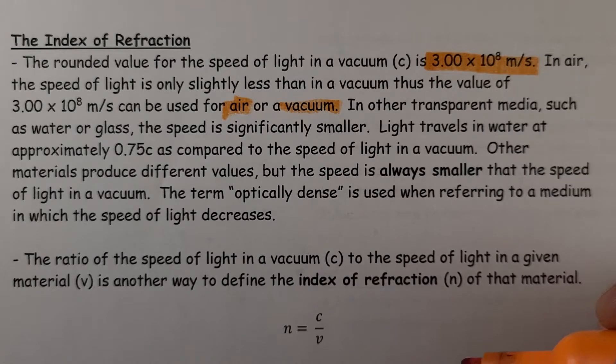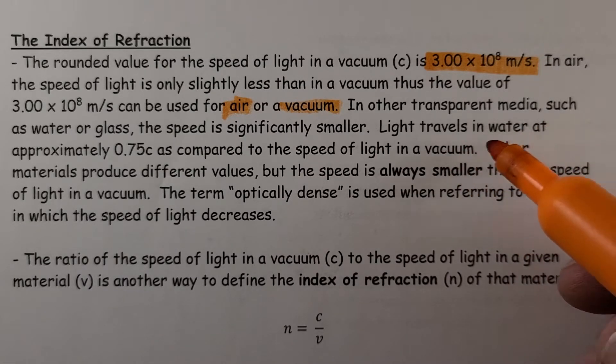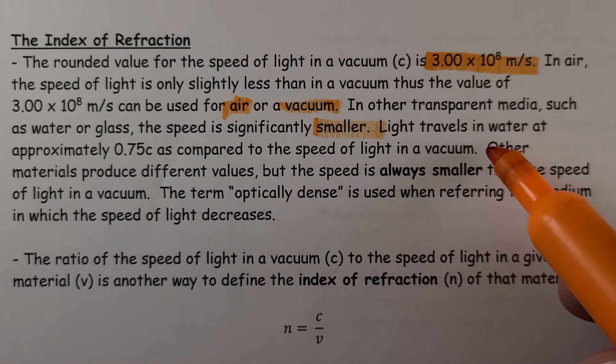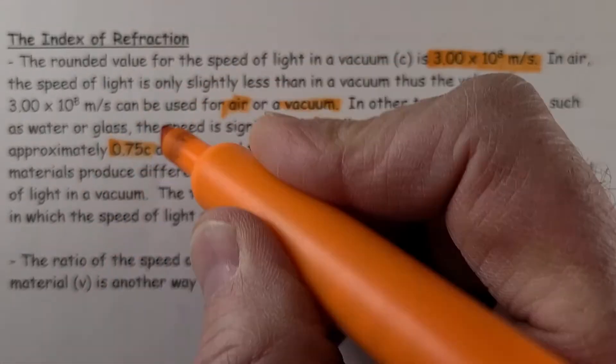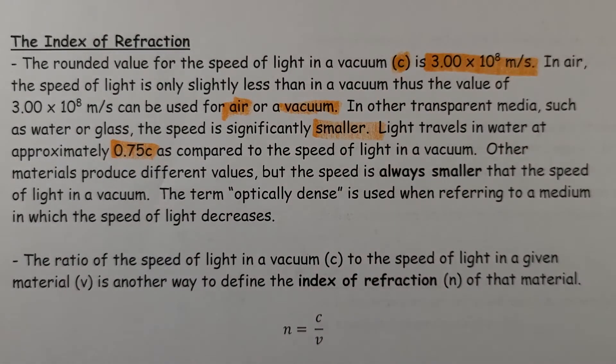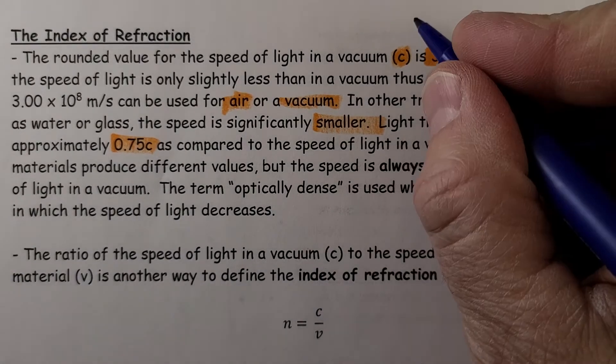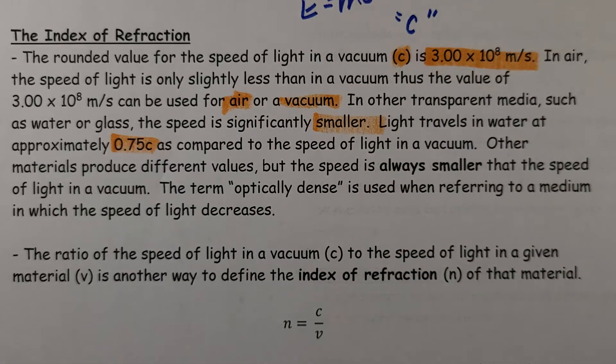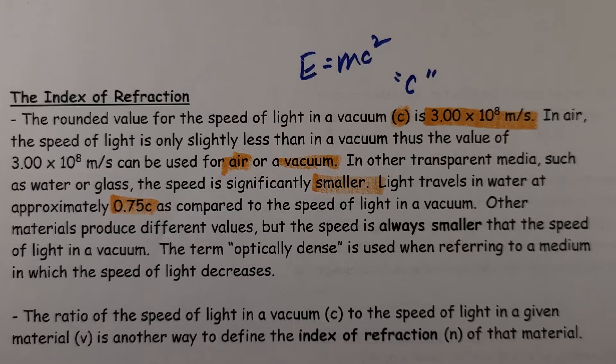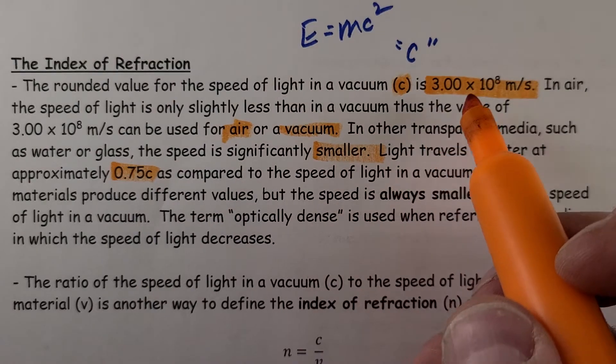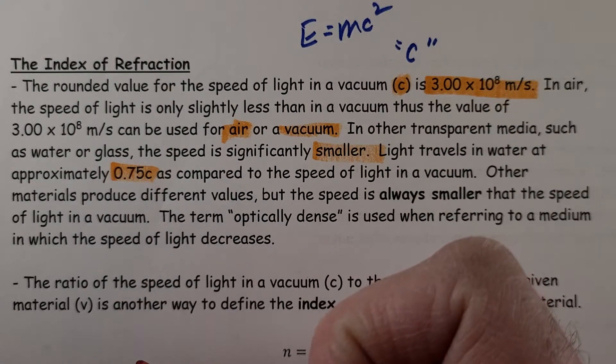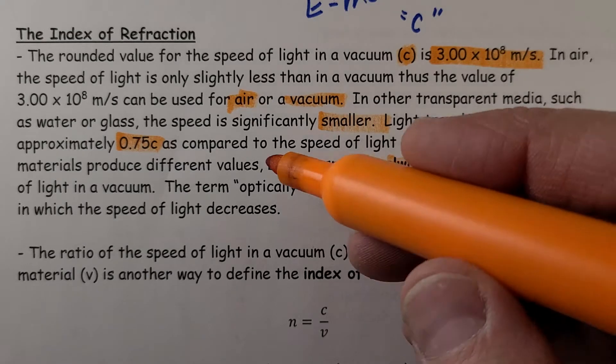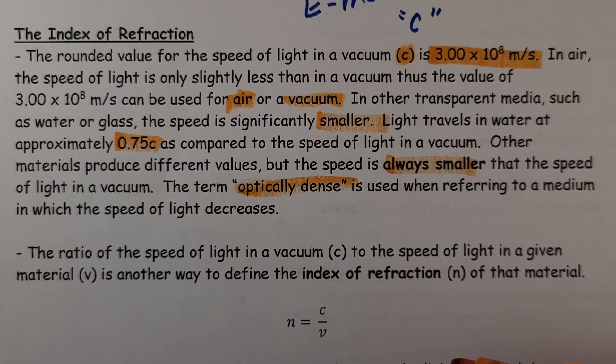In other transparent media, such as water or glass, the speed is smaller because light slows down in dense media. Light travels in water at approximately 0.75c. We use this value so often that it has its own value, little c. And yes, that is the c in Einstein's E equals mc squared. That c represents the speed of light in a vacuum. In water, 75% of that number will be the speed of light in water. Other materials produce different values, but the speed is always smaller in those media. The term optically dense is used when referring to a medium in which the speed of light decreases.